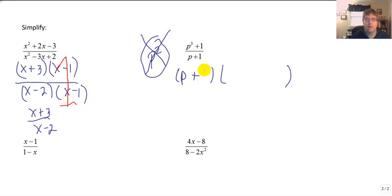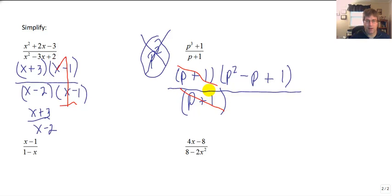So p cubed plus 1: the cube root of p cubed is p, the cube root of 1 is 1. Then we have to square p, so we get p squared. We square 1, and we get minus p plus 1. So I factored my numerator. My denominator is simply p plus 1. So now I have common factors. p plus 1 is a common factor. I can cancel those because they are 1. I am applying the fundamental property. And my final answer is p squared minus p plus 1.